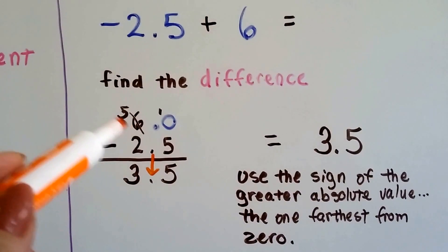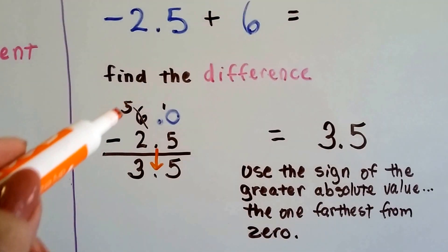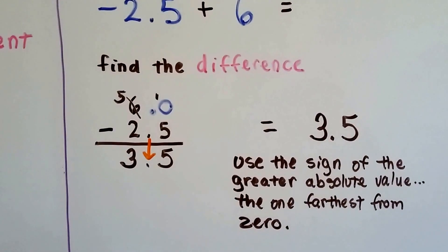But, we can borrow from the 6, make it a 5, give the 1 to the 0, make it a 10. 10 take away 5 is 5. 5 take away 2 is 3. Our answer is 3.5,